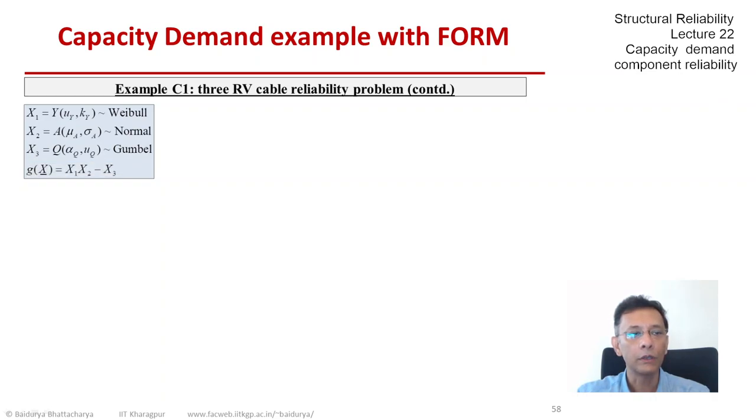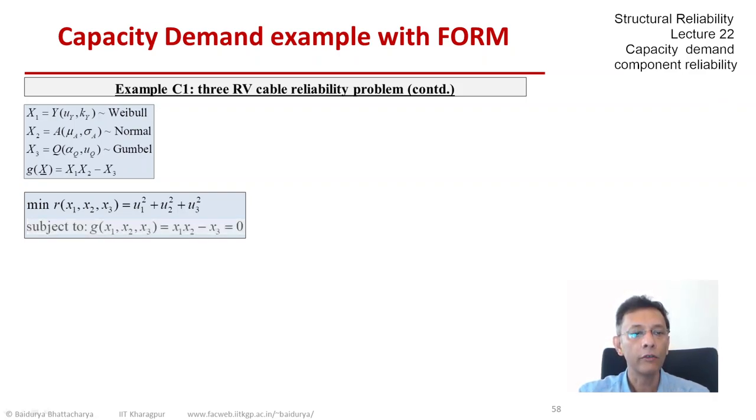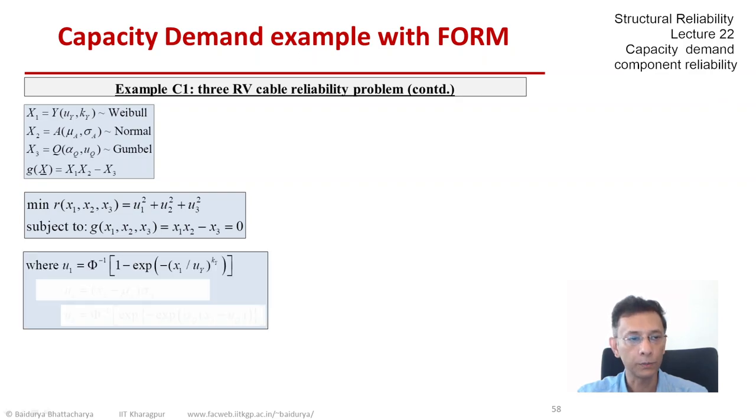So this is our problem statement. We have G of X equals X1, X2 minus X3. And now we want to minimize the function of X1, X2, X3, which is our distance in the standard, independent standard normal space, U1 square plus U2 square plus U3 square. Obviously, there is a relation between the X's and the U's. The constraint is also put in the basic variable space. So we have a nice looking constraint, an equality constraint, X1, X2 minus X3 is equal to 0. And here are the function relations between the U's and the X's. So this is the Weibull to normal transformation. This is the normal to normal transformation for U2. And for U3, this is the Gumbel to normal transformation. So this is our problem setup.